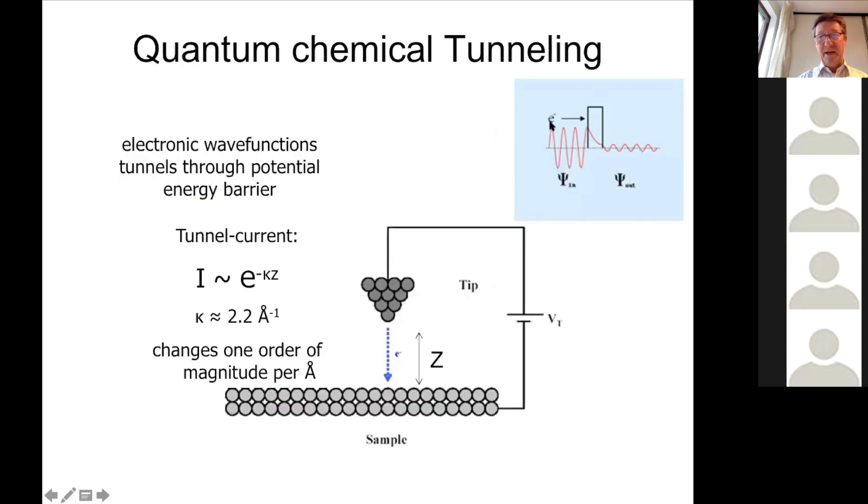Basically, here we see a wave function that tunnels through a barrier, a finite barrier, and ends up at the other side. So that's the tunneling, and this barrier basically is the medium between the tip and the surface. That can be a vacuum, and then you have a very high barrier for the electron to move.